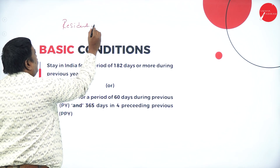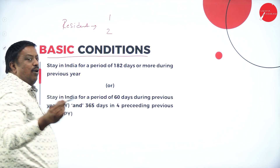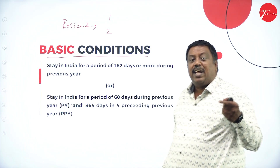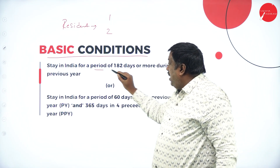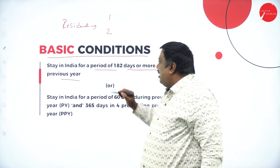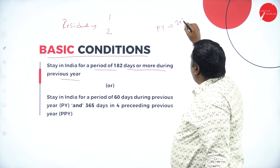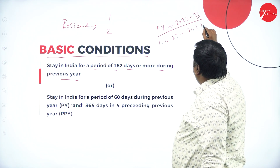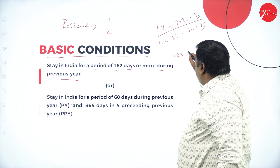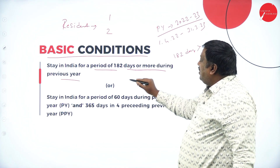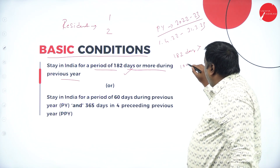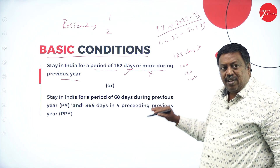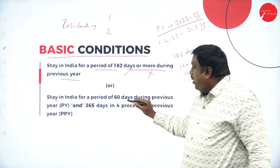If I want to become a resident, I need to satisfy either one or two basic conditions. The first basic condition is: he or she should have stayed in India for a period of 182 days or more during the previous year. For example, in previous year 2022-23, from 1st April 2022 to 31st March 2023, if my stay in India is 182 days or more, I've satisfied this condition. If my stay is only 100, 120, or 140 days, I have not satisfied this condition.